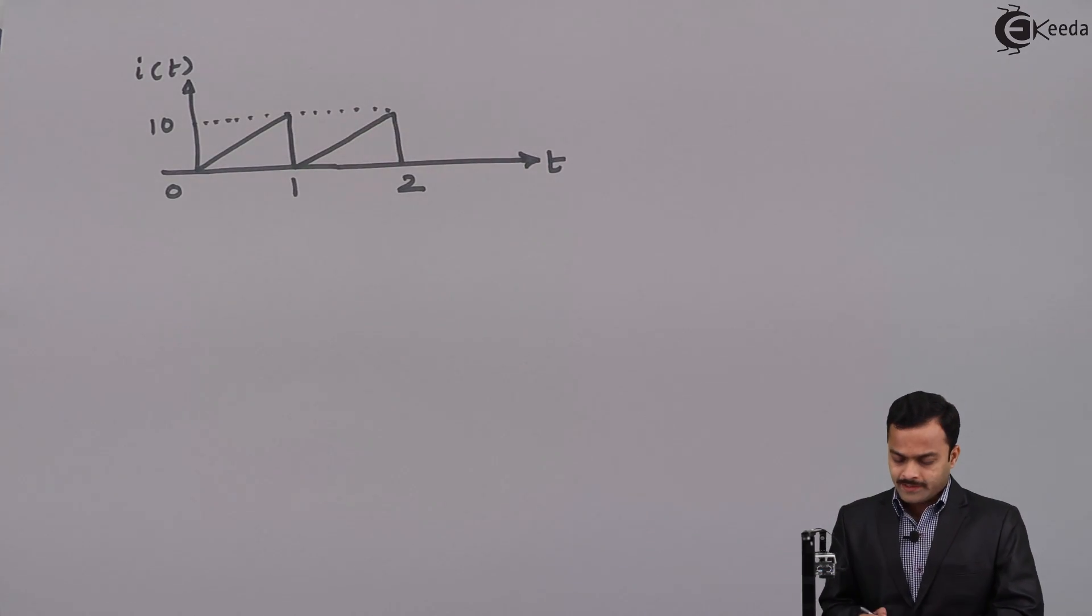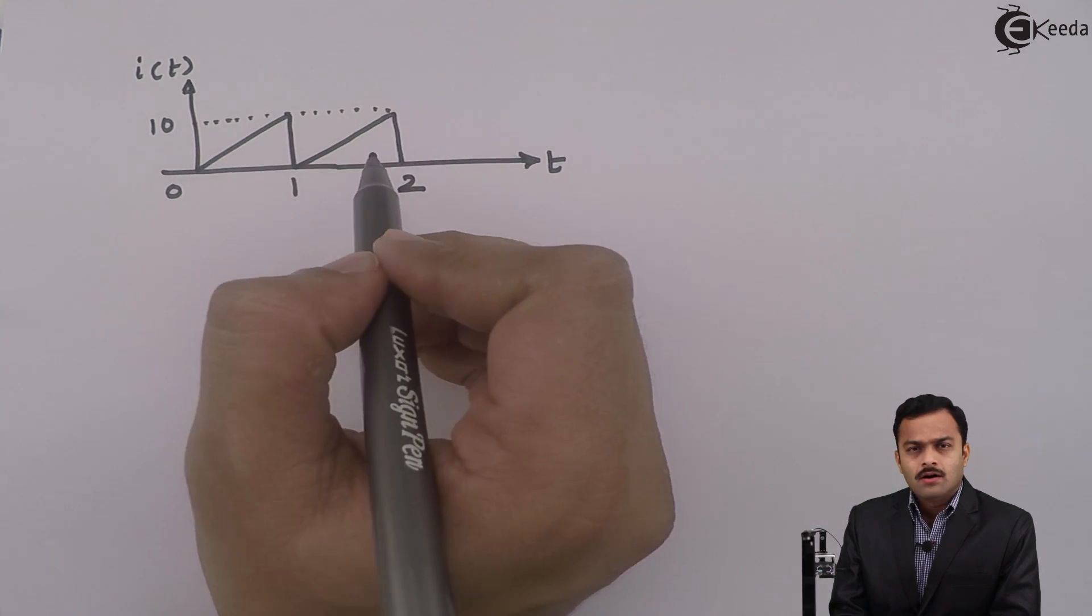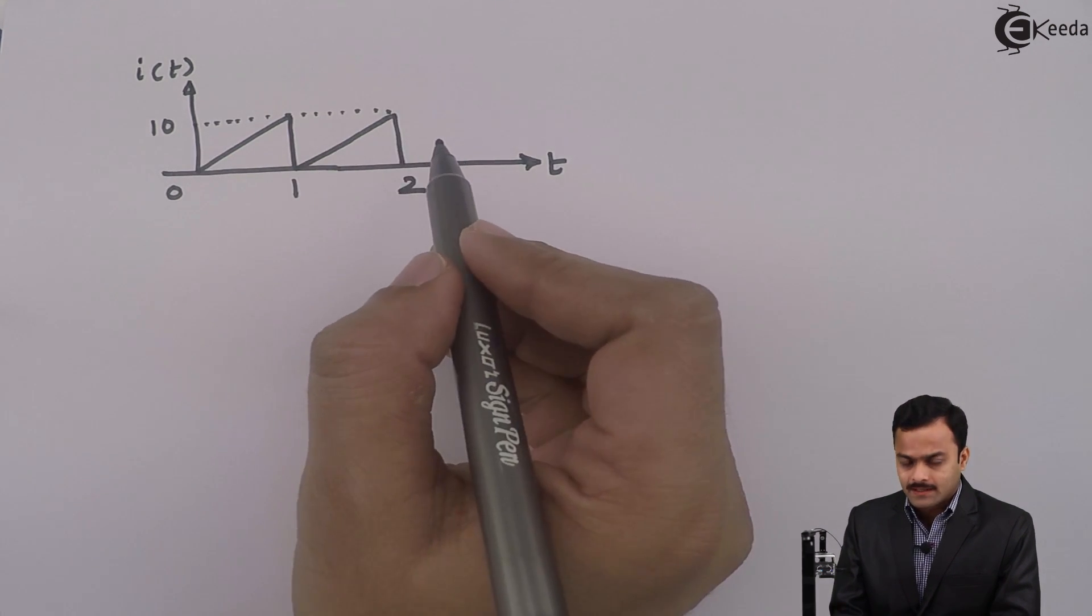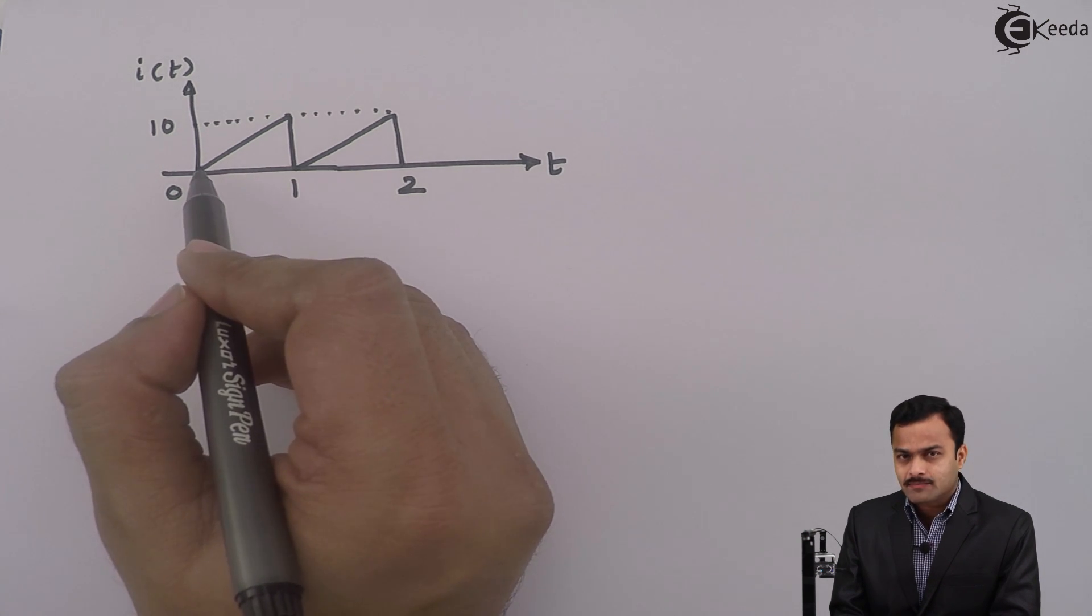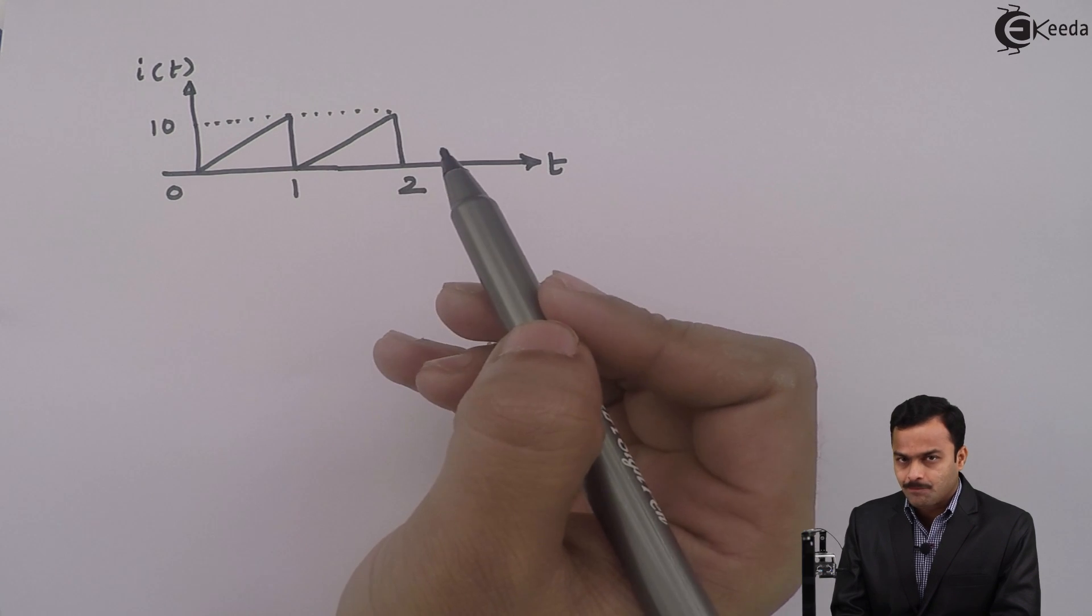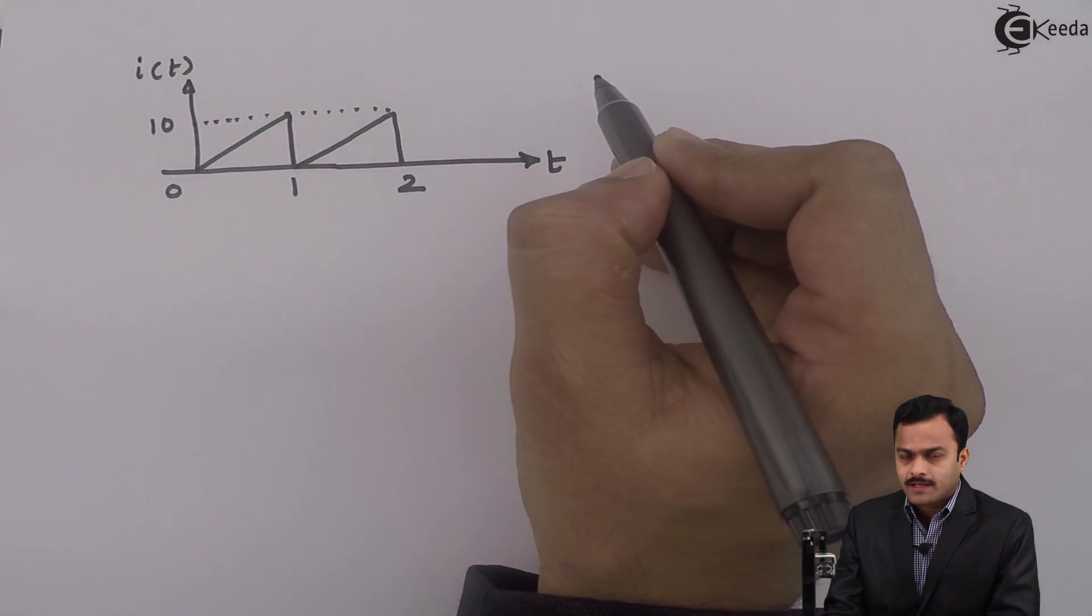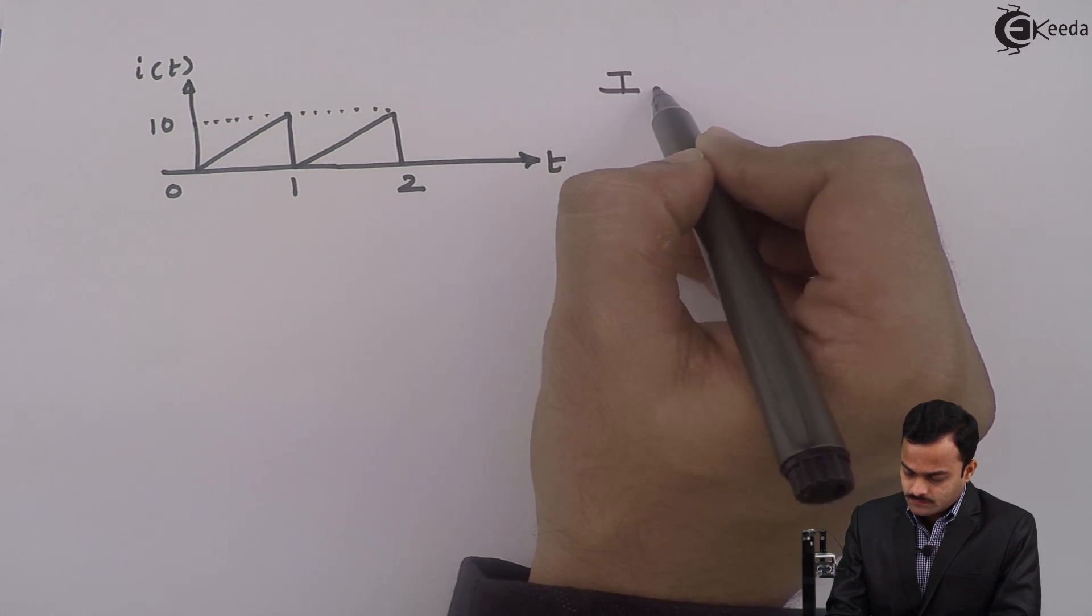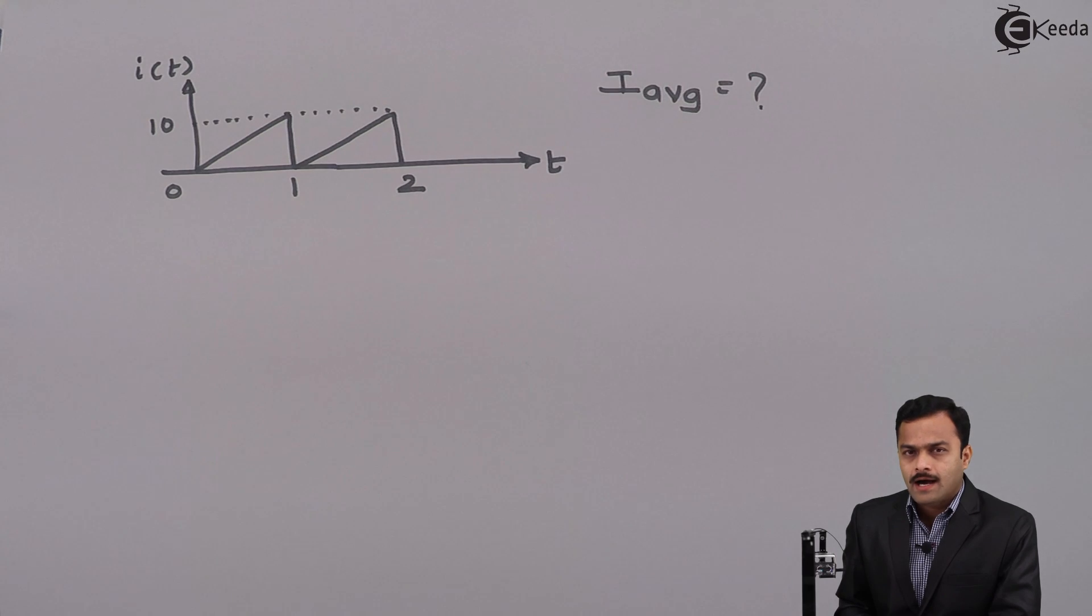Here I have taken a waveform which is changing in a triangular manner, but it is AC waveform because it is changing its magnitude with respect to time. For this waveform, we are supposed to calculate average value and RMS value.